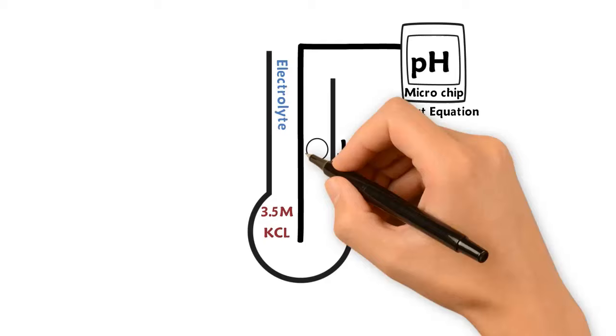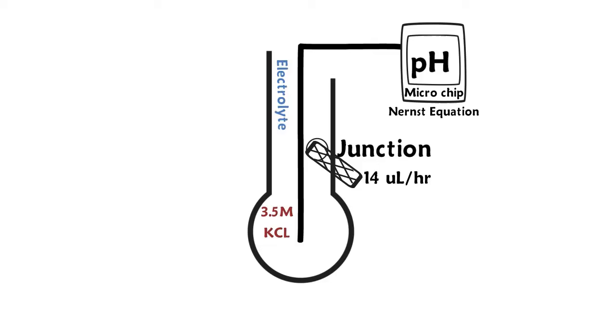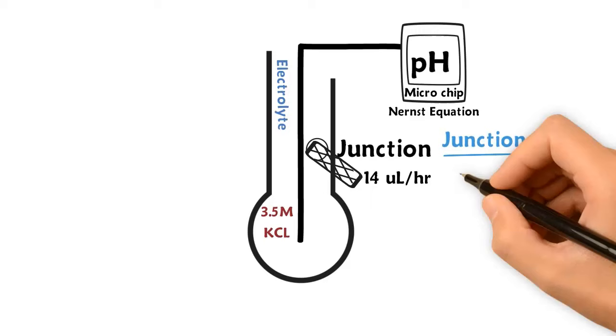Cloth junction equals 14 microliters per hour. There are three basic types of junctions to allow for the leaking of the electrolyte KCL solution into your testing solution.